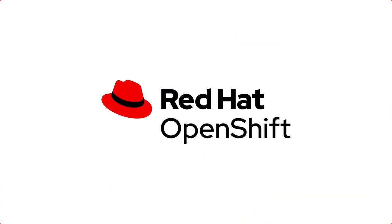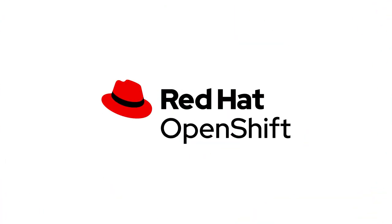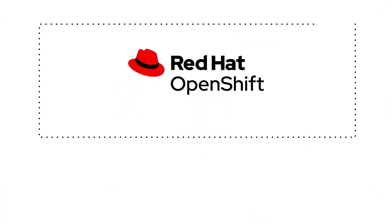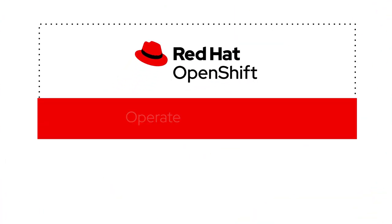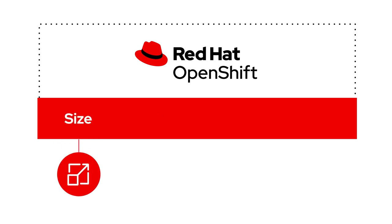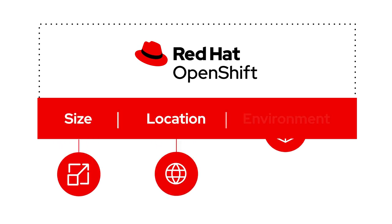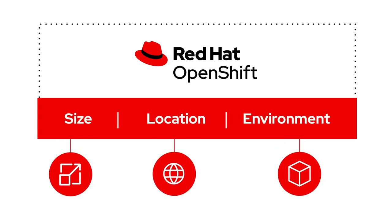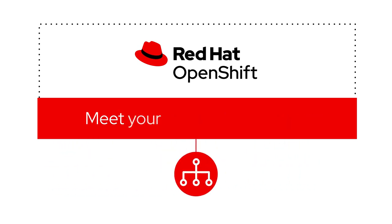With Red Hat OpenShift. Red Hat OpenShift allows you to operate consistently, no matter your size, location, or environment, through three topologies that can help address your architecture's specific needs.